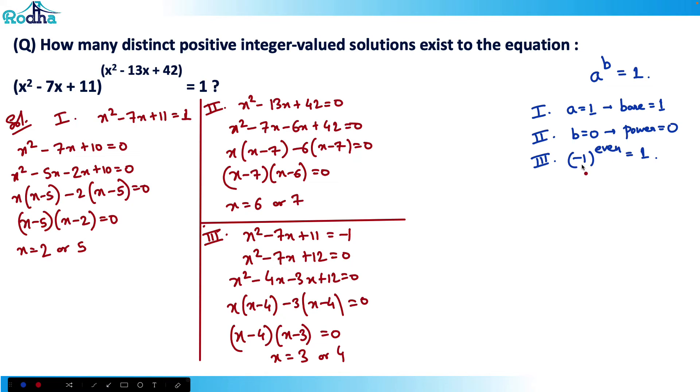For condition 3, minus 1 raised to even power should equal 1, so we need to verify the power is even. At x = 3: 3² - 39 + 42 is even. At x = 4: 4² minus 13(4) plus 42 is also even. Both are correct.